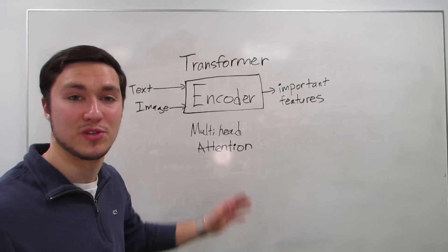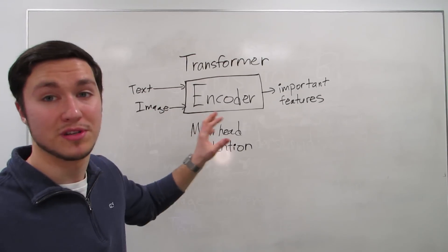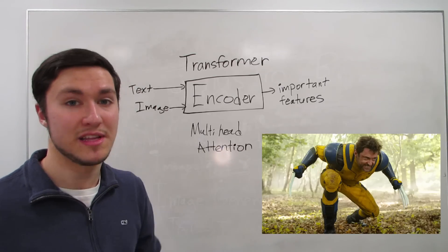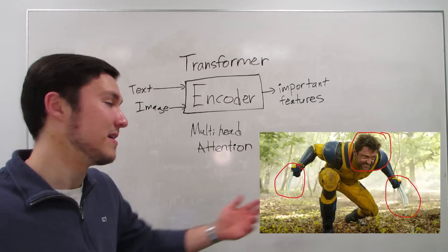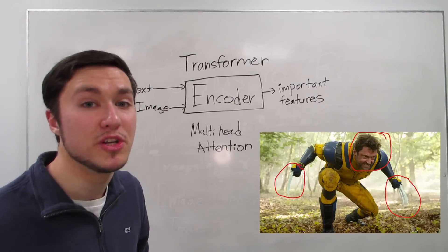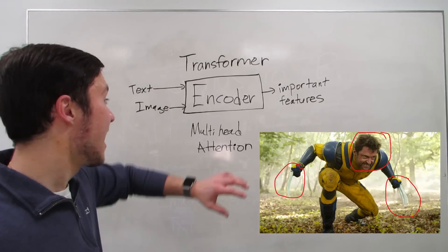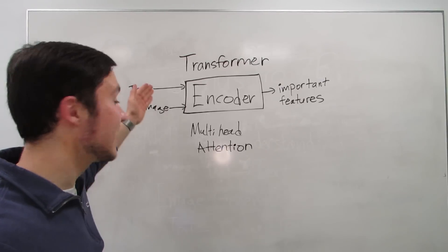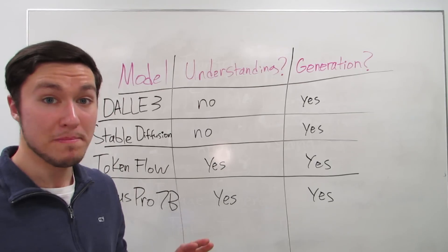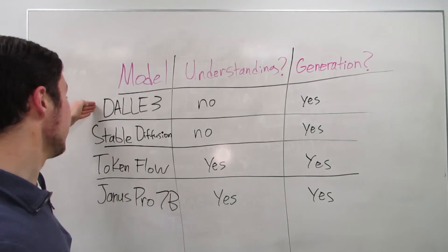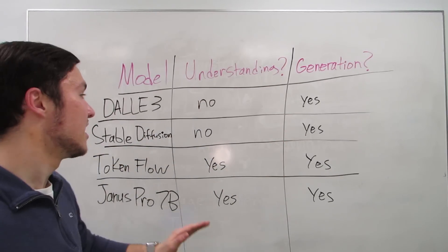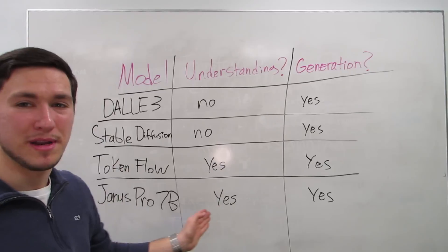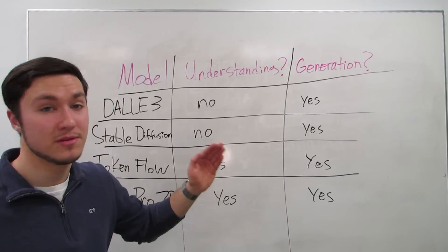For example, a well-trained encoder can look at an image of Wolverine and pick out his face, his claws, and his yellow clothing as the most important aspects that allow it to classify and understand the image. Having this encoder is really important so the model can understand images as well as other formats like text, videos, spreadsheets, and documents. Previous models like DALL-E and Stable Diffusion can generate images from text but can't actually understand images as they generate them, and something like TokenFlow tries to do both but doesn't do either particularly well — whereas Janus Pro does both very well.